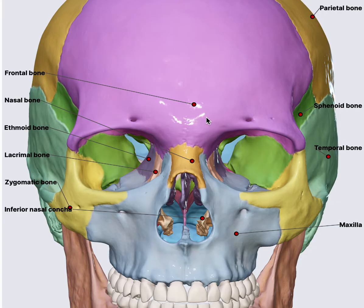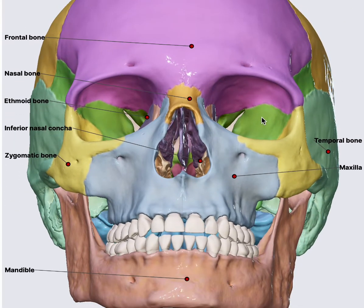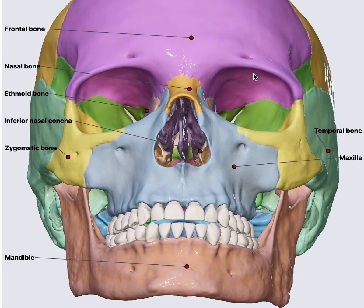One thing that is quite important to understand is this notch — the supraorbital foramen — which contains the supraorbital nerve and vessels. As you can see, the frontal bone forms the roof of the orbit here.